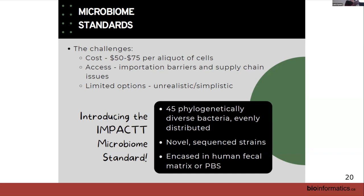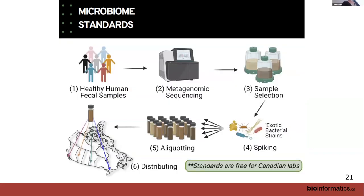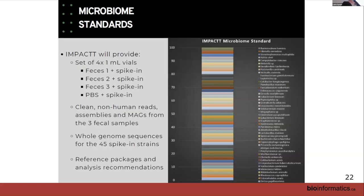The human feces matrix is a collaboration with Emma Allen-Vercoe's lab. We did shotgun sequencing on healthy human fecal samples, whole-genome sequenced all spike-in isolates, pooled and aliquoted them, and have been distributing them across Canada to about 25 labs over the past year. We're hoping to distribute the reference dataset this month or next so everyone can map their reads back. The spiked bugs are in theory equal abundance, though our sequencing will reveal typical abundance ratios.